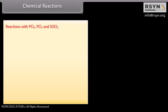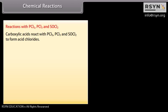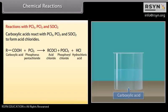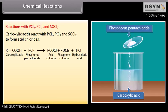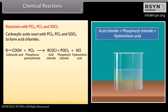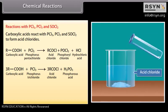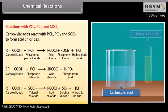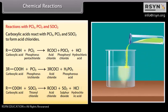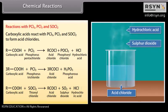Reactions with phosphorus pentachloride, phosphorus trichloride, and thionyl chloride: carboxylic acids react with these reagents to form acid chlorides. Carboxylic acid reacts with phosphorus pentachloride to form acid chloride and hydrochloric acid. Carboxylic acid reacts with phosphorus trichloride to form acid chlorides and phosphorous acid. Carboxylic acid reacts with thionyl chloride to form acid chlorides, sulfur dioxide, and hydrochloric acid.